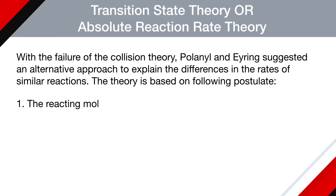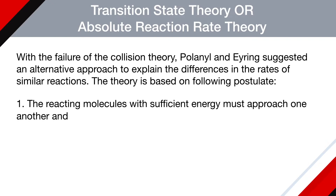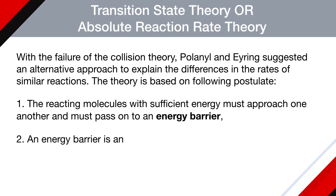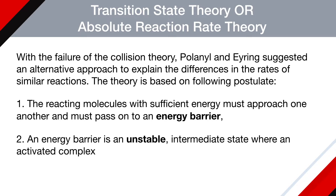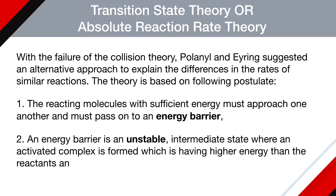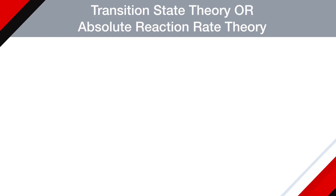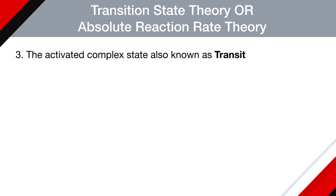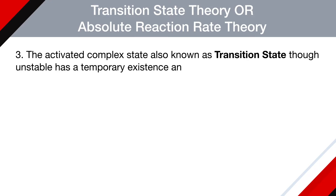The reacting molecules with sufficient energy must approach each other and must pass over an energy barrier. The energy barrier is an unstable intermediate state where an activated complex is formed, which has higher energy than the reactants and products. The activated complex state, also known as the transition state, though unstable, has a temporary existence and is in equilibrium with the reactants.